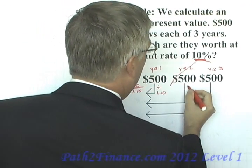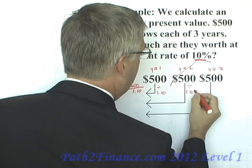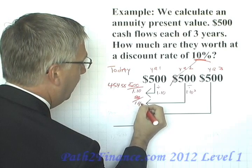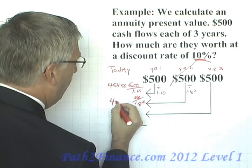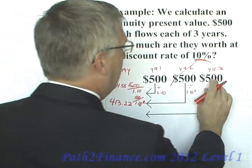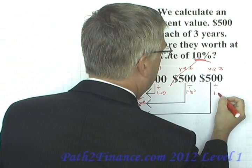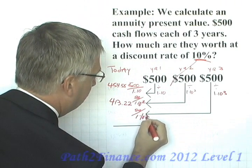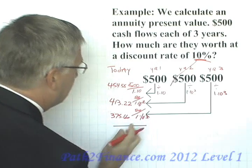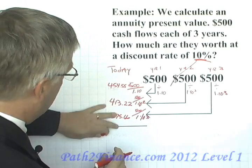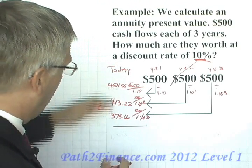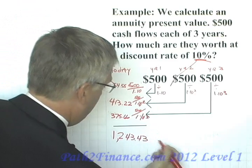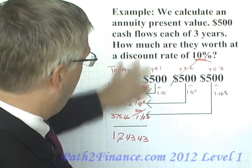In year two, we divide by 1.10 again, raised to the power of two: $500 divided by 1.10 squared is $413.22. And then in year three, continuing on, raised to the power of three, is $375.66. Notice how as time goes out, the present value is less and less, which makes sense with the time value of money. The sum of those three numbers is $1,243.43.